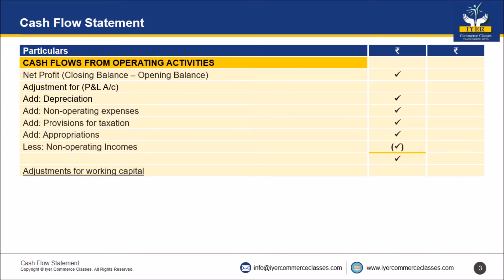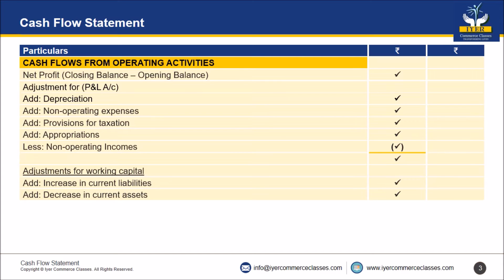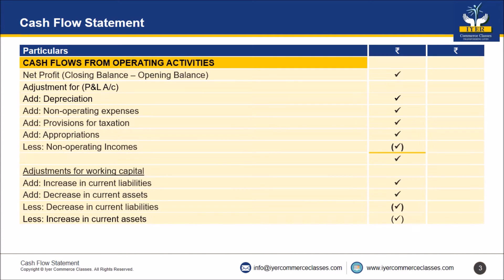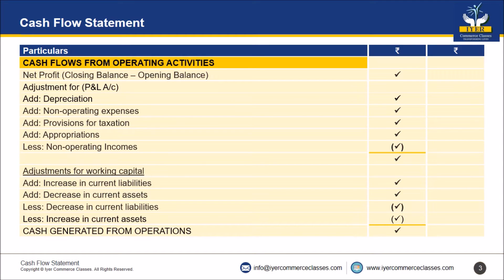After that, you will make some adjustment for working capital. You will add increase in current liabilities, add decrease in current assets, less decrease in current liabilities, less increase in current assets. When you add up everything, we get cash generated from operations. Less income tax paid. The last line will be net cash from operating activities.